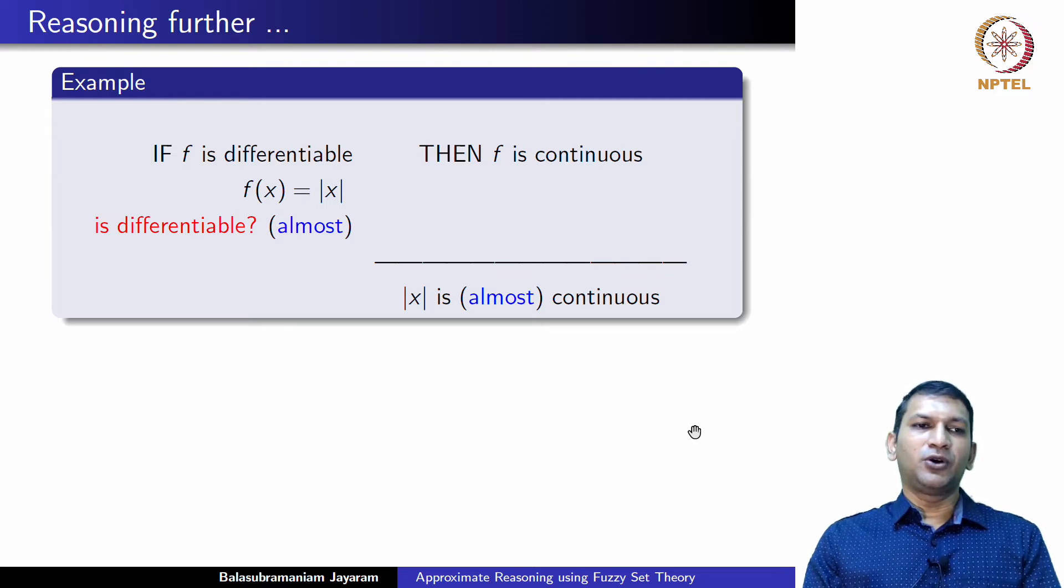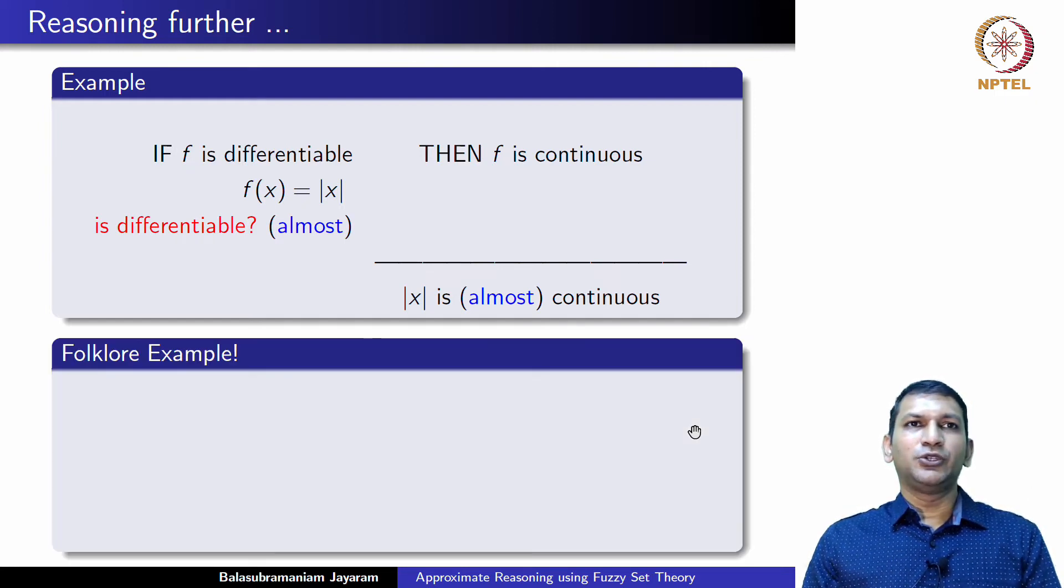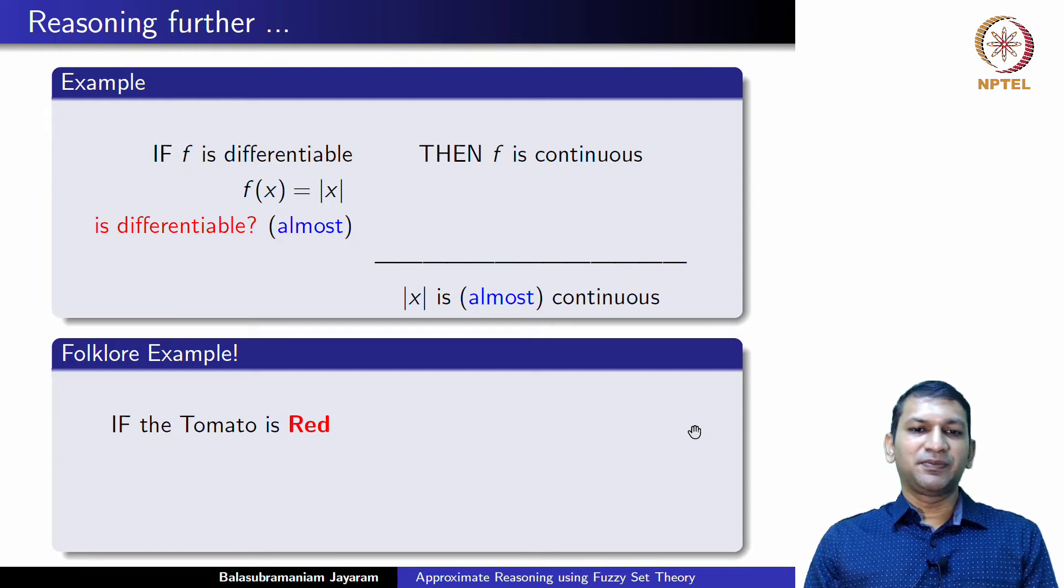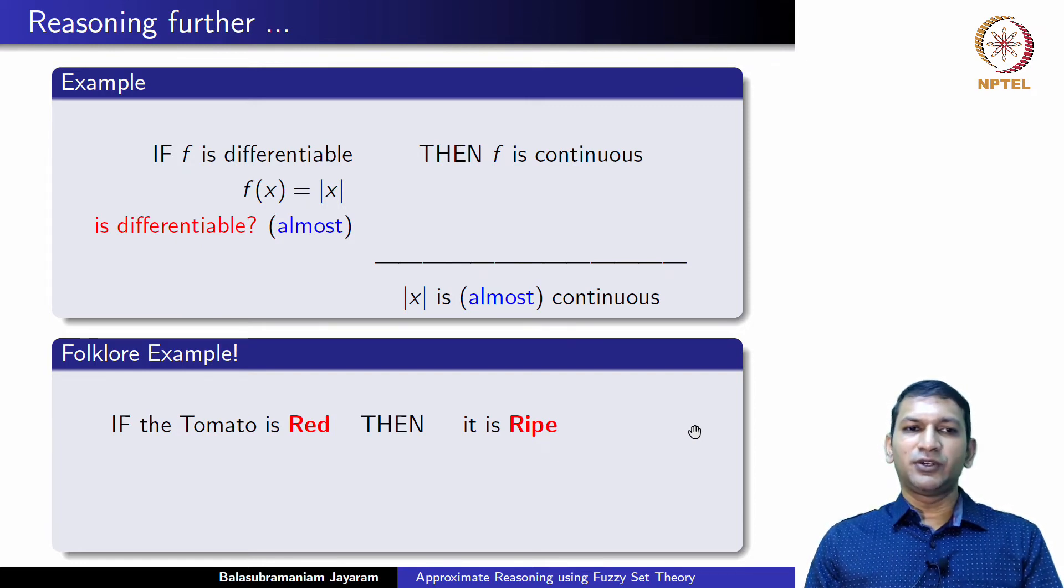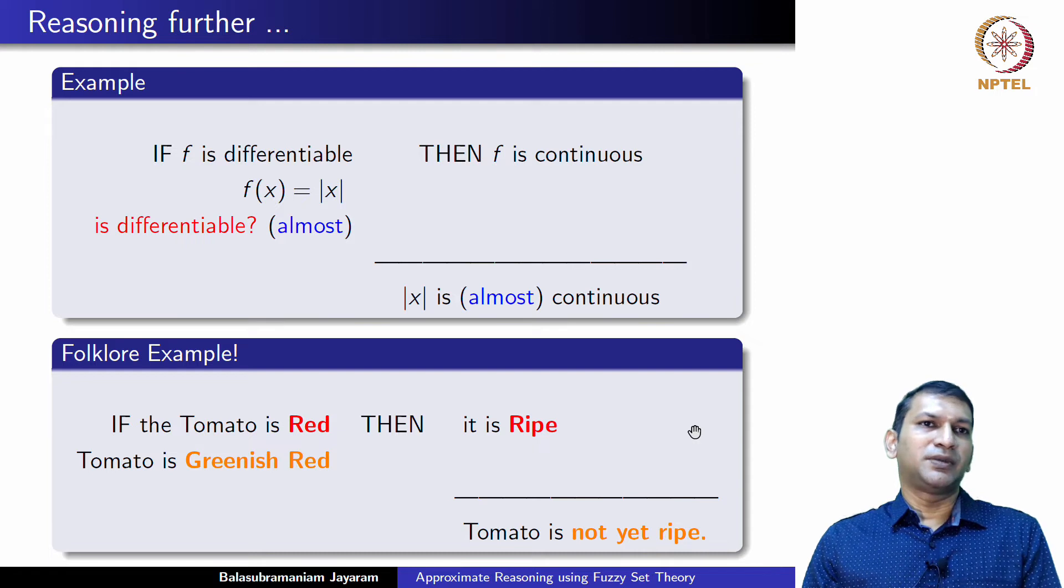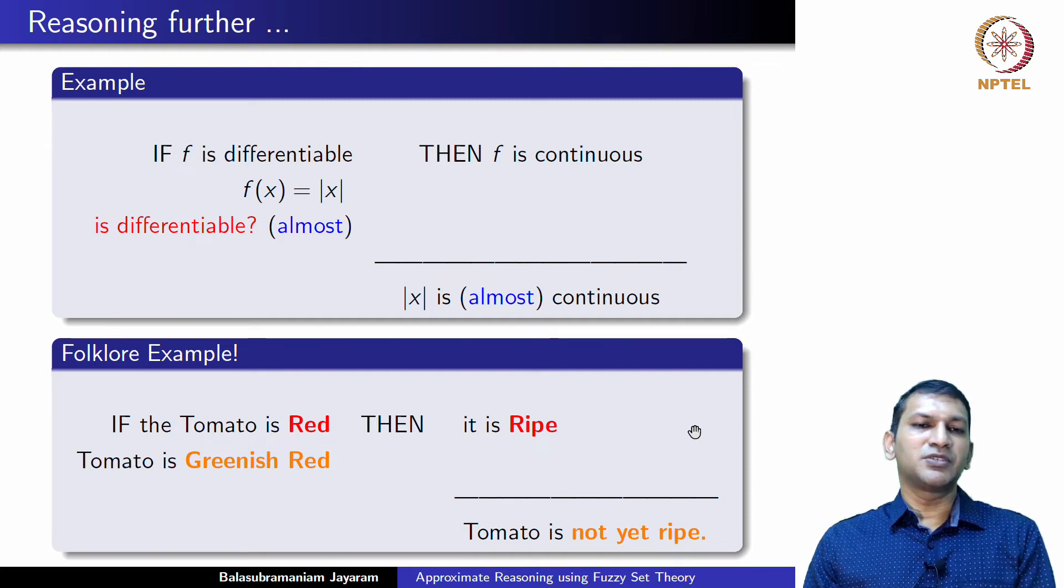For a moment, allow me to come out of the realm of mathematics into what we would call common sense reasoning that we do every day. For this, allow me to use what we would call a folklore example because this is something that you would see in any basic book in fuzzy set theory. Let us consider this piece of knowledge: If the tomato is red, then it is ripe. Perhaps this is the kind of knowledge that you would carry when you go to the vegetable market. Now, you stand in front of a vegetable vendor, you pick up a tomato and what you see is the tomato is not red but greenish red. But we almost effortlessly and nonchalantly immediately infer that the tomato is perhaps not yet ripe. Now, this is the kind of reasoning that comes under approximate reasoning.